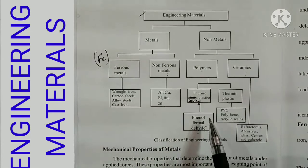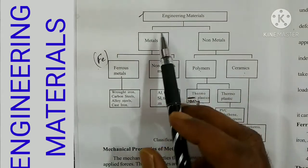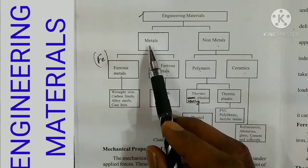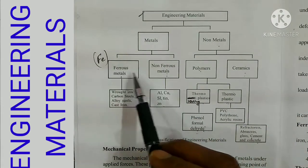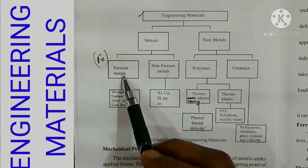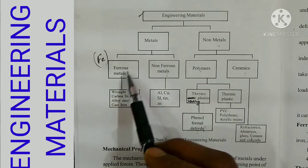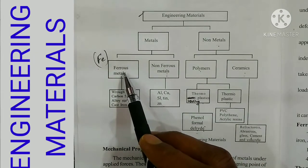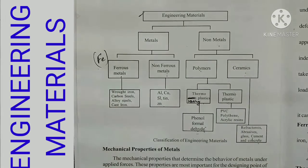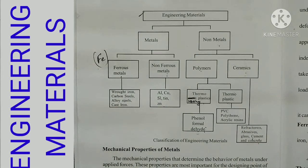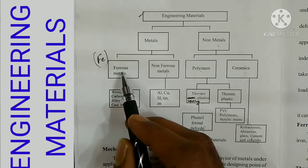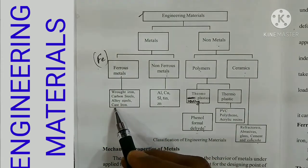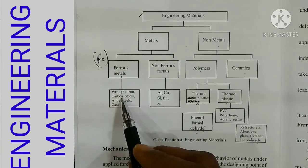Now a recap: engineering materials can be divided into two categories — metals and non-metals. Metals are classified into two categories. If a material contains iron and is attracted by a magnet, it is a ferrous metal. Examples of ferrous metals are iron, carbon steel, alloy steel, and cast iron.